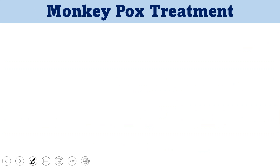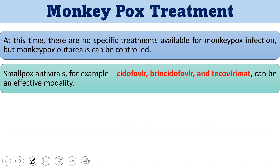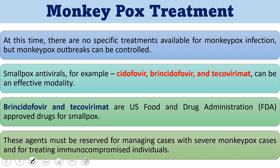Now focusing on treatment: at this time there are no specific treatments available for monkeypox infections, but it can be controlled, managed, and slowed using some medicines and vaccines. There are some antiviral drugs called smallpox antivirals - examples include cidofovir, brincidofovir, and tecovirimat - that can be effective. These medicines are commonly used for smallpox and have been recommended for use in monkeypox treatment as well.